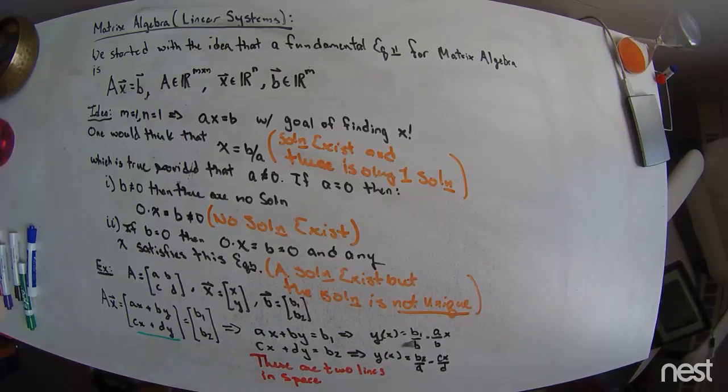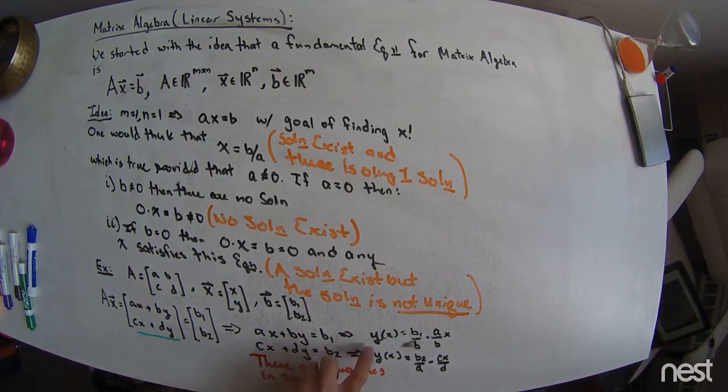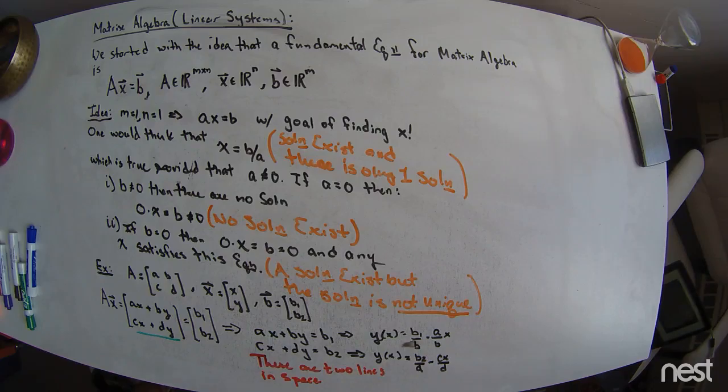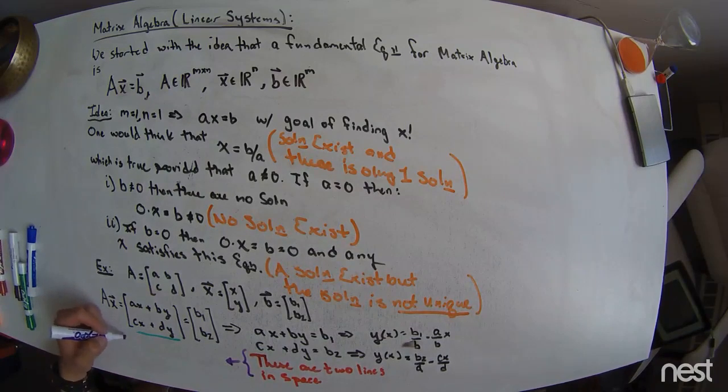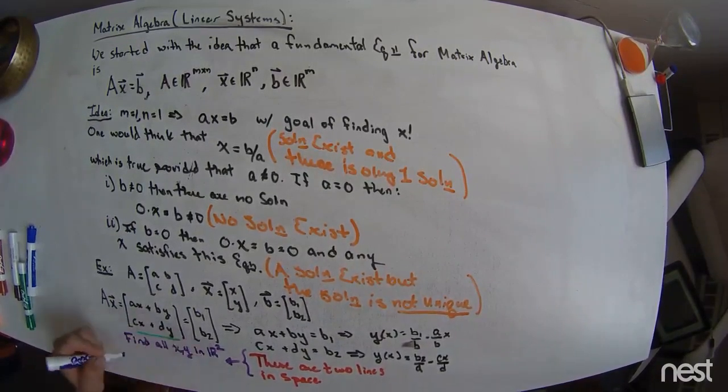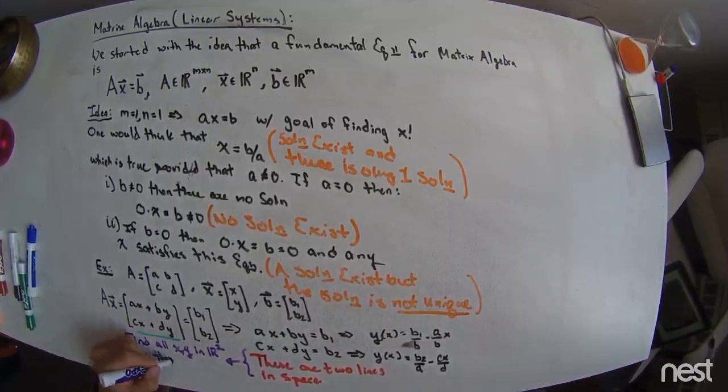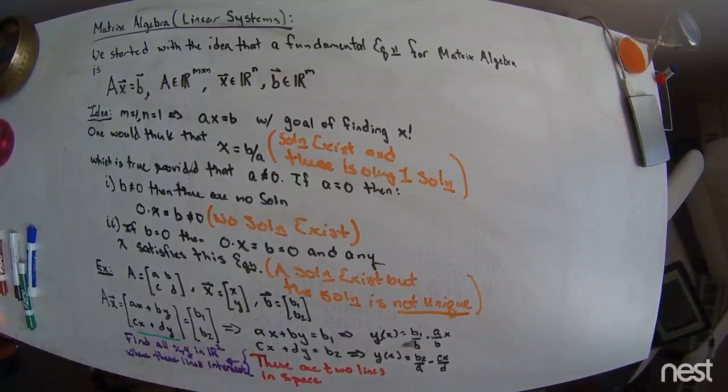And so to solve this original equation, A times x equals the b vector, we have to make both of these equations simultaneously true, which is the same as saying both of these equations here have to be equal. Well, if both of these equations are equal, we're looking at shared y values. Well, if we have shared y values, there should also be a shared x value. And so the problem is now phrased as find all points in the xy plane where these two lines intersect.